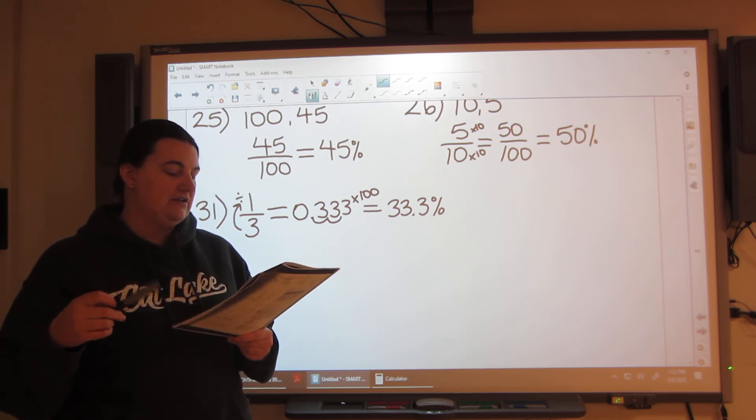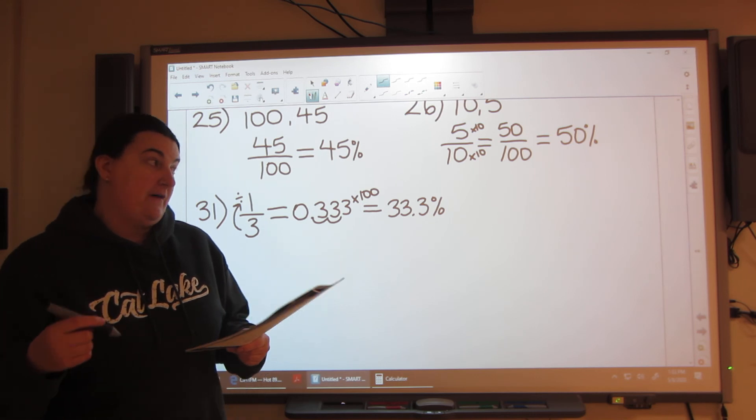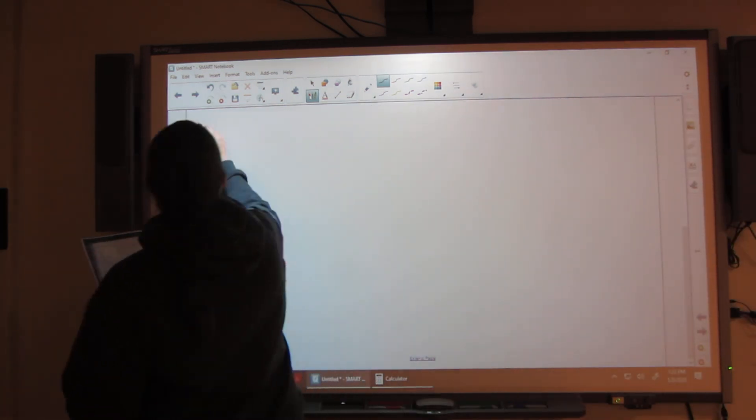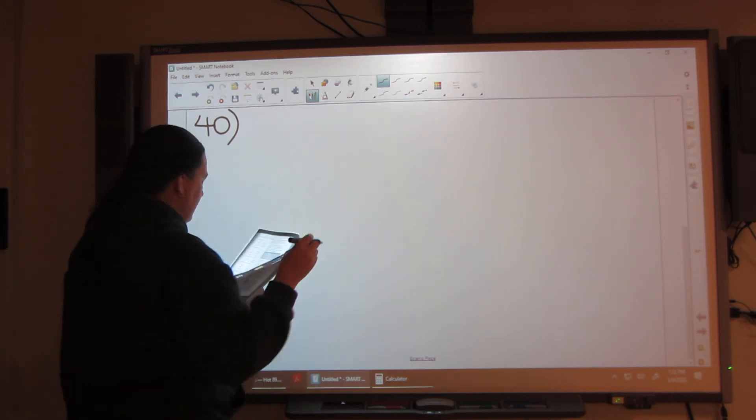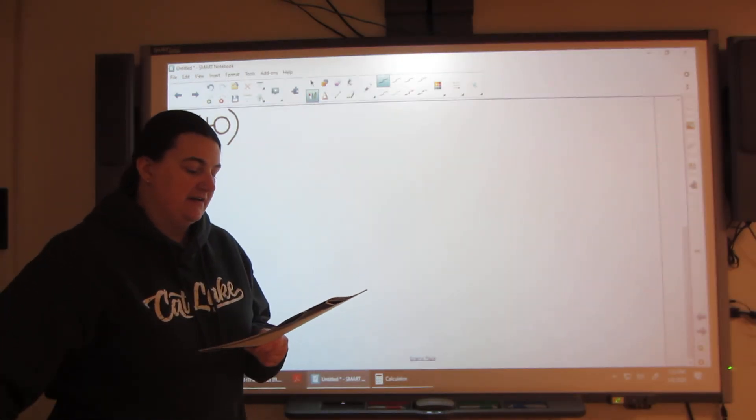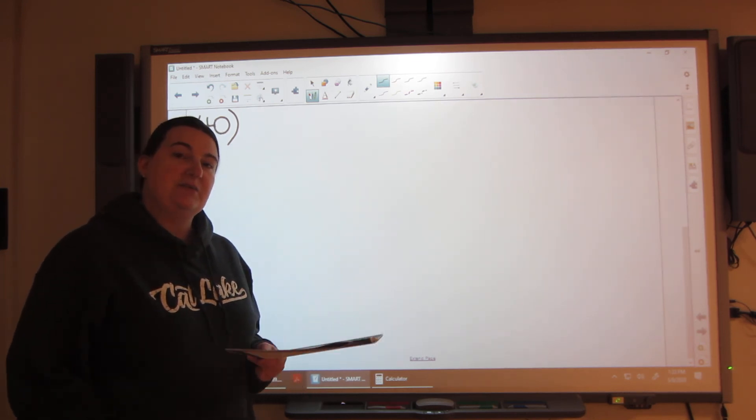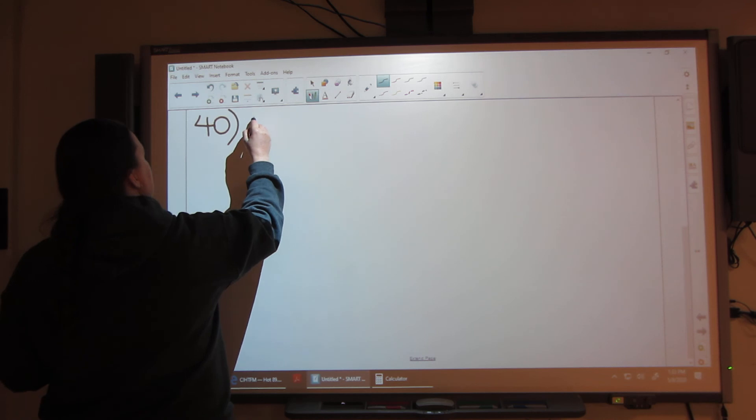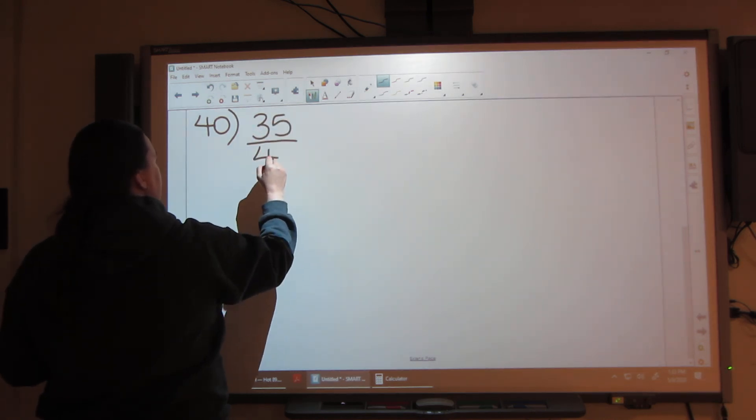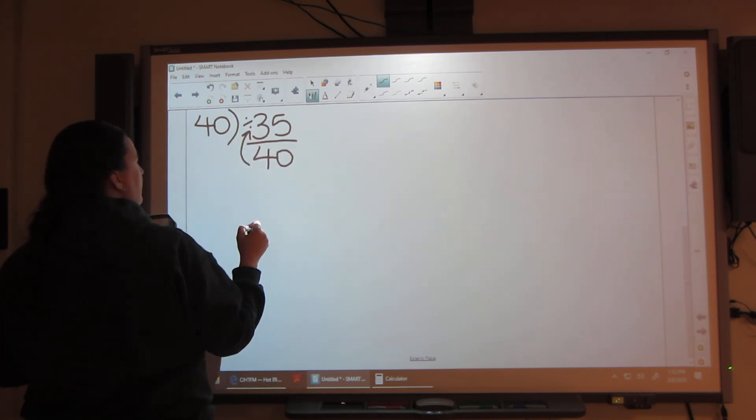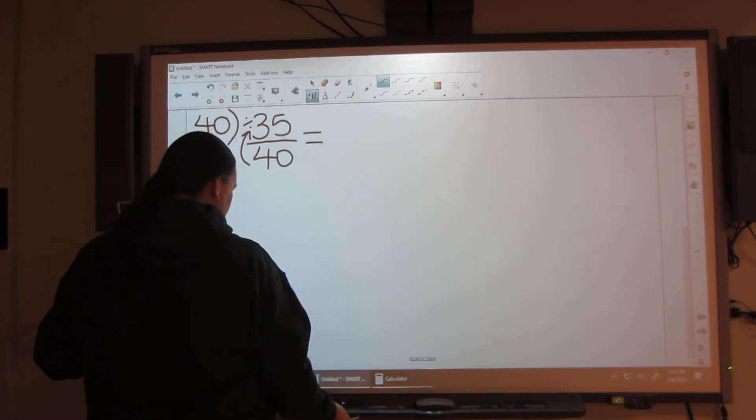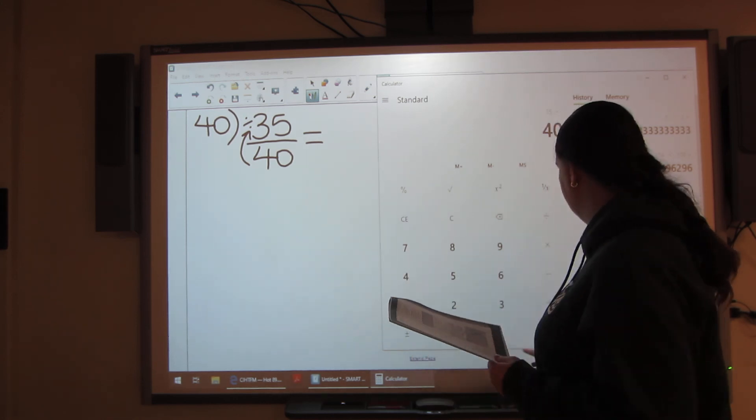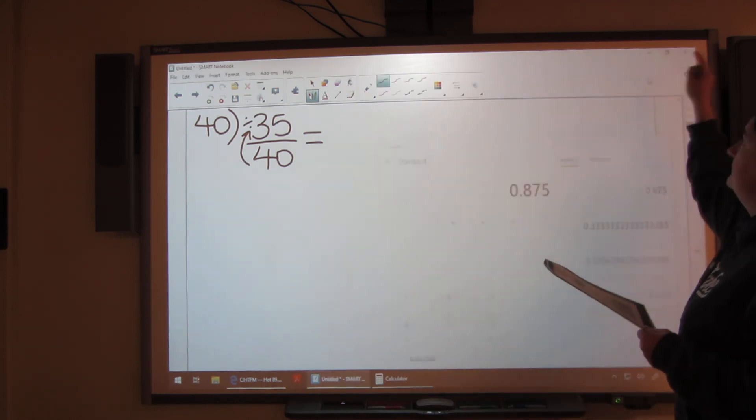All right. And now we're going to take a look at number 40 all the way to 45. I need more room. So 40 to 45. Number 40. What percent of the first number is the second number? Express each answer to the nearest tenth. So this is where we're going to be doing the division times by 100, the two-step problem. So I have 35 out of 40. So I'm going to divide that step one. Where is my calculator?